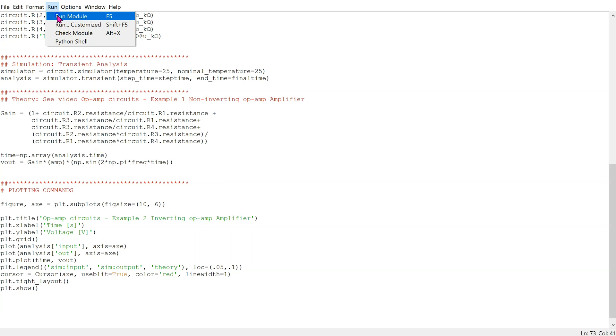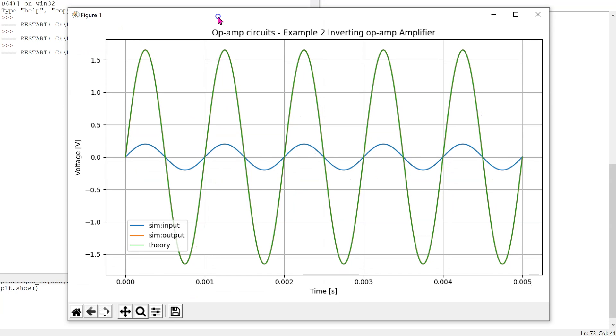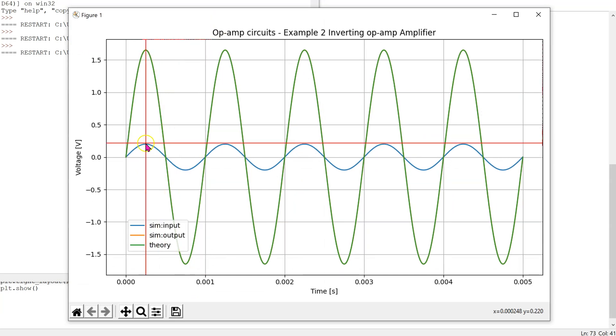When we run this code, we can obtain the transient simulation plots. In this case, the input is a 0.2-volt peak sine wave and the output is a 1.65-volt peak sine wave. The theory and the simulated waveforms match perfectly.